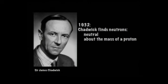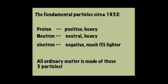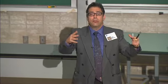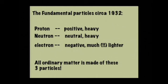Chadwick was also the primary British scientist who collaborated on the Manhattan Project during World War II. So by 1932, our world was all of a sudden much, much simpler. It seemed like there were just three fundamental particles of nature: the proton, which was positive and heavy; the neutron, which was neutral and heavy; and the electron, which was negative and about 2,000 times lighter than the proton or neutron. And everything was made of those.